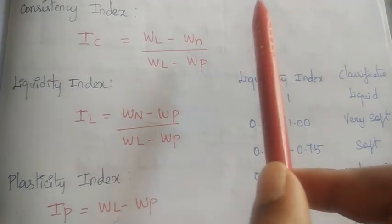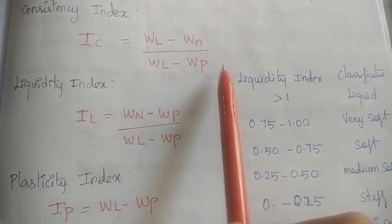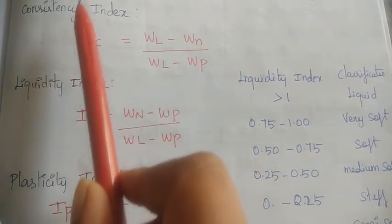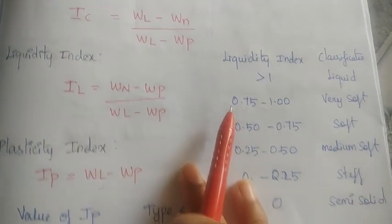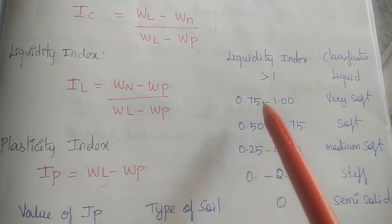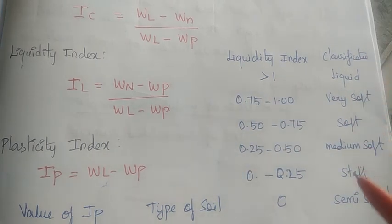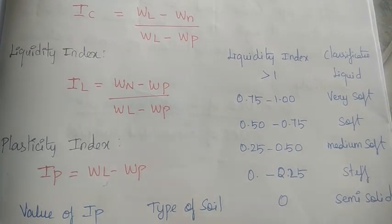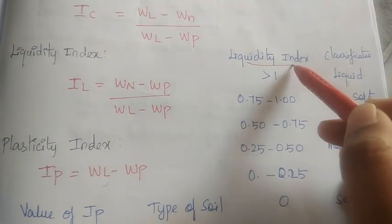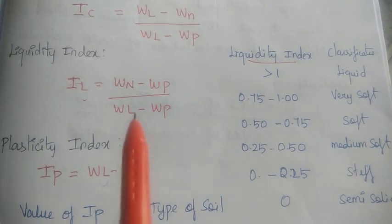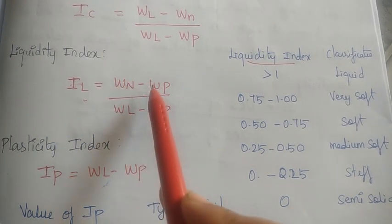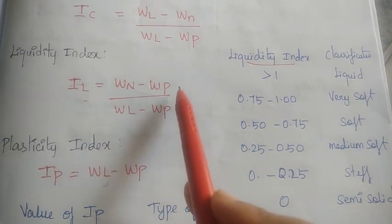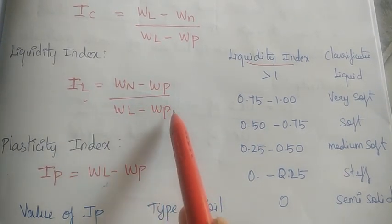We also have plasticity index. Liquidity index IL is the natural water content minus plastic limit, divided by liquid limit minus plastic limit. The consistency index and liquidity index are related — you can vary between the two.